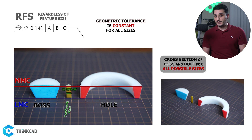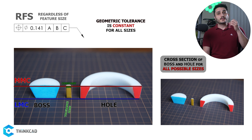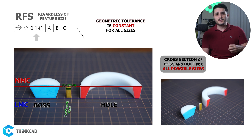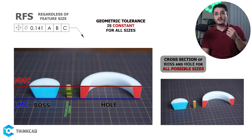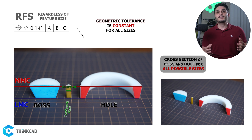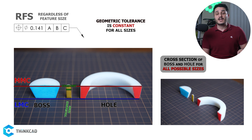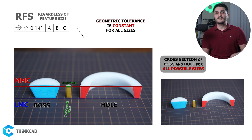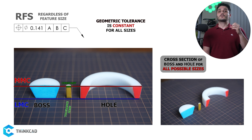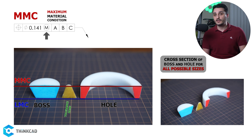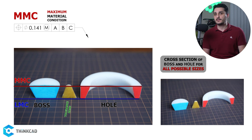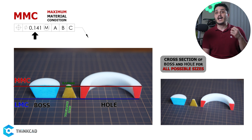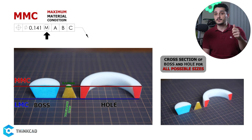Let's think about what this means. Both these features are allowed to be off-center with the same tolerance of 0.141 mm when they are at their largest or smallest sizes, and also any other size in between. The size of our features doesn't have any effect on how much they can be off-center from their true position. Now, let's see what happens when we use the MMC symbol next to our geometric tolerance value of 0.141 mm.